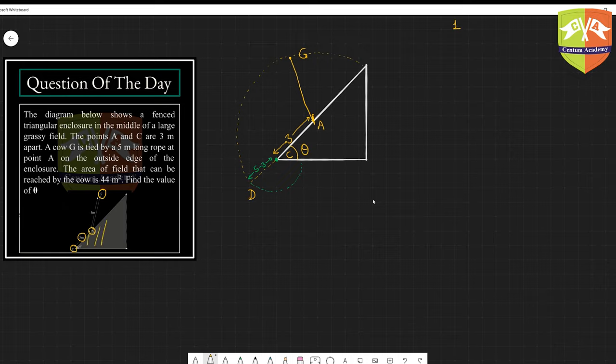There must be a boundary something like that and there's another boundary here, so there's a triangular enclosure. Enclosure means some space which is closed or bounded by some boundaries. Now the area of field that can be reached by the cow is 44 meter square, that's given.